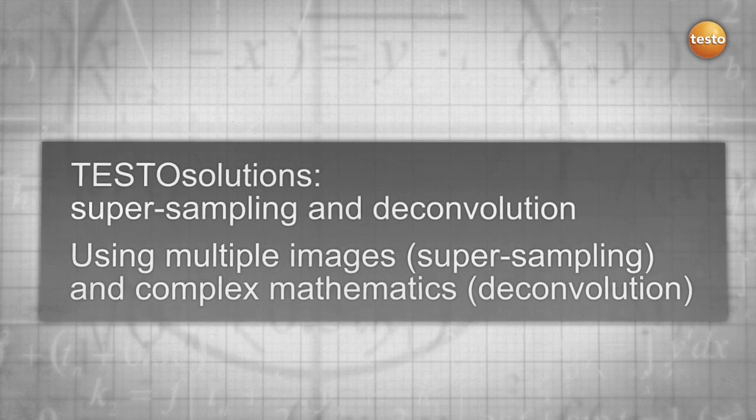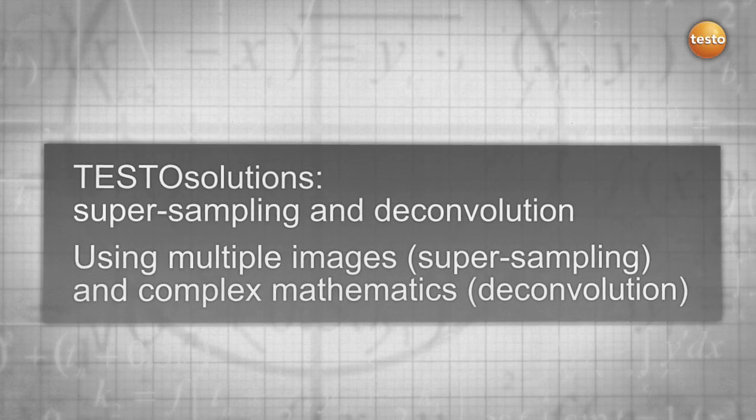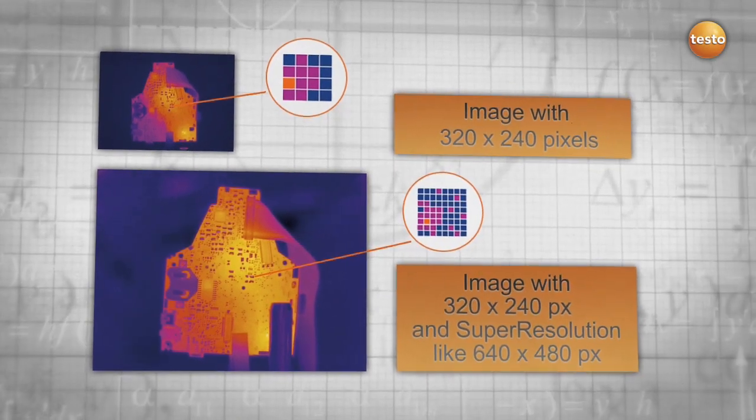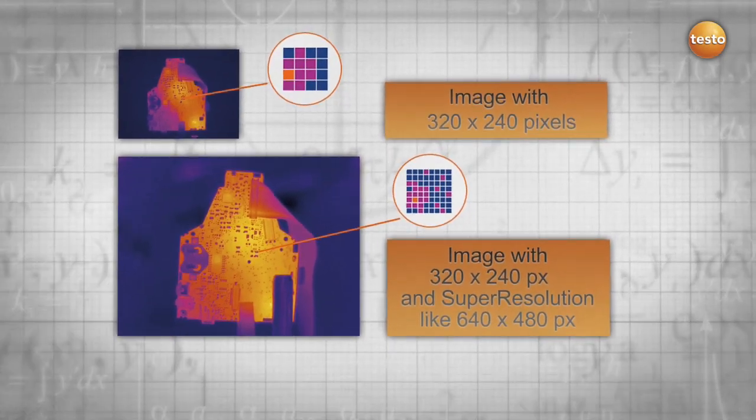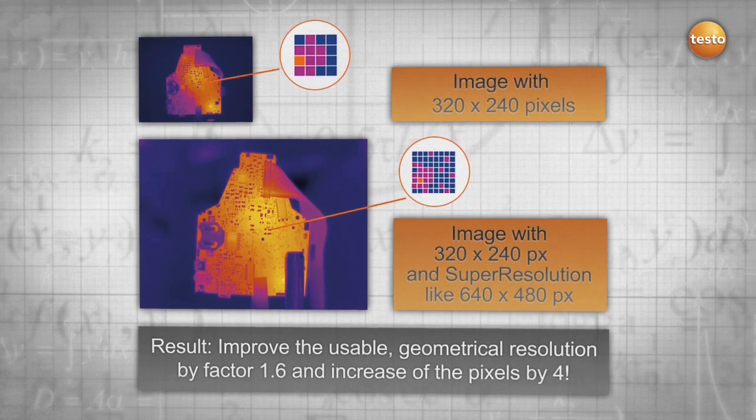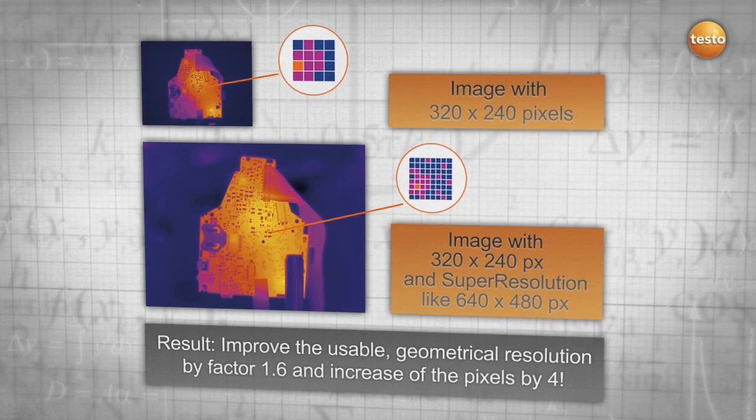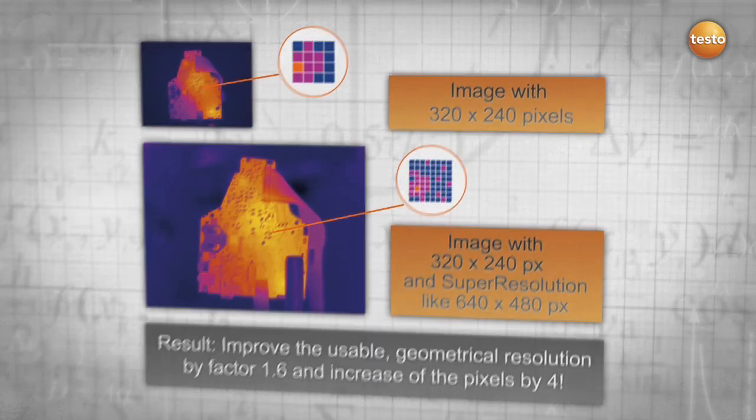By using multiple images, supersampling and complex mathematics, deconvolution, you get more information out of your thermal images. Your result? An improvement of the geometrical resolution by 1.6 and an increase in your pixels by 4 for more details and safety.